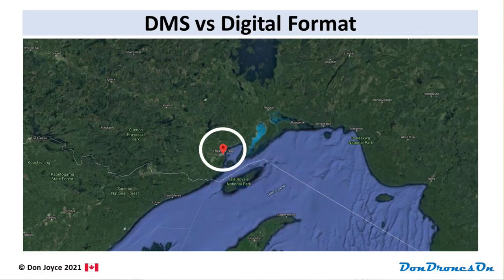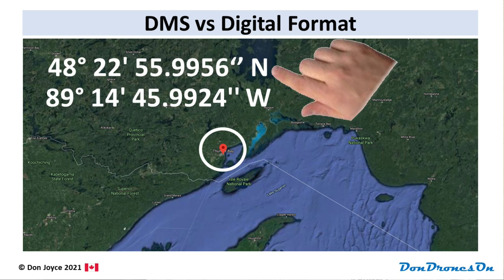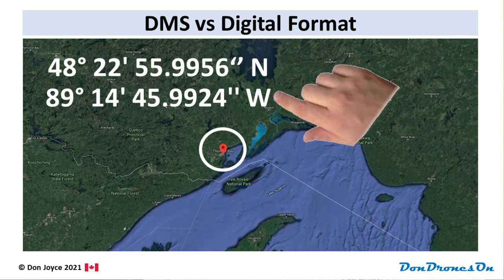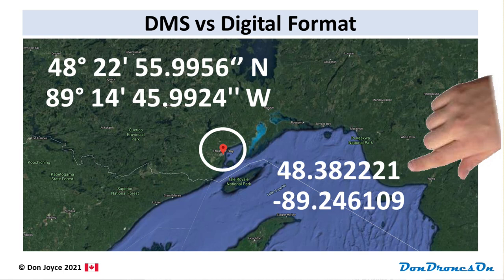Every place on earth can be defined with a latitude and longitude using DMS coordinates — degrees, minutes, seconds. For example, Thunder Bay, Ontario is at 48 degrees, 22 minutes, 55 seconds north, 89 degrees, 14 minutes, 45 seconds west. With the degrees and minutes, DMS coordinates are a massive pain for everyone, especially computers. So there's another way called the decimal method. Using it, Thunder Bay is at 48.38221 and minus 89.246109 — much easier to type, say, and cut and paste. Note that everywhere in Canada has a positive latitude and a negative longitude.